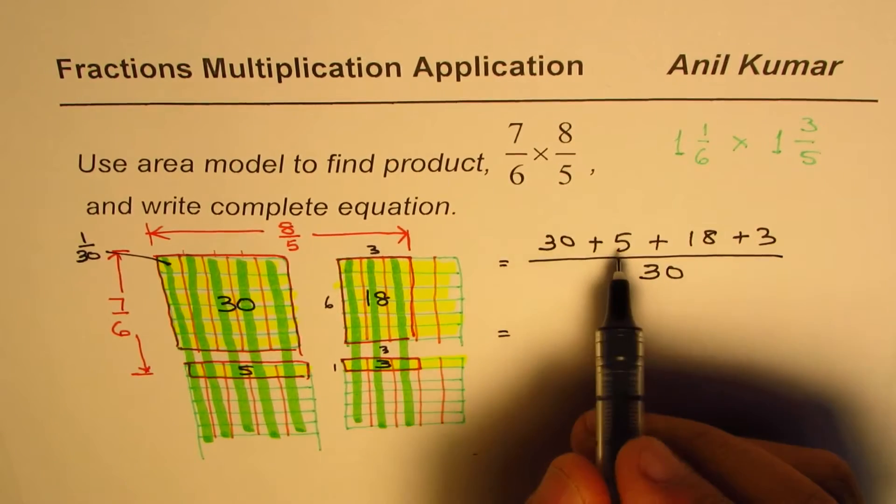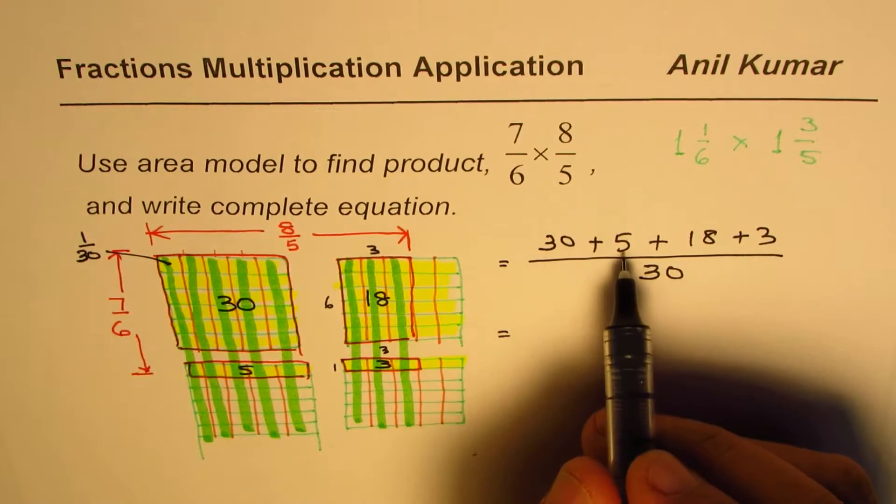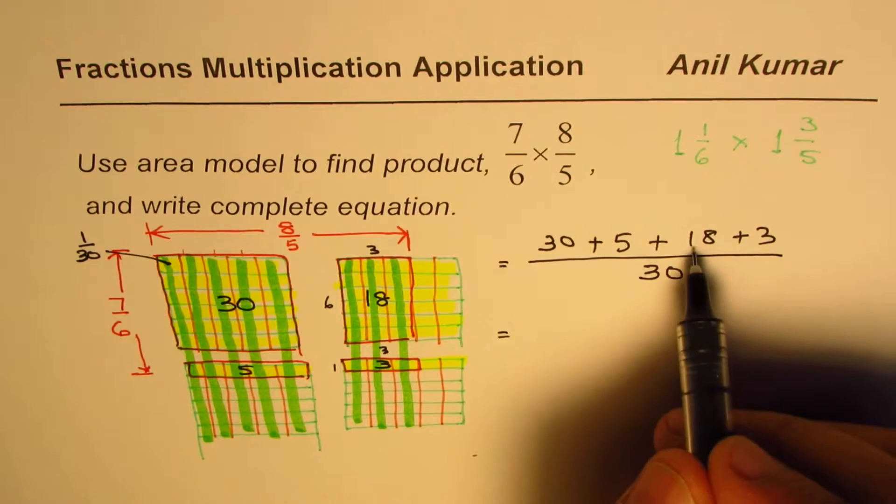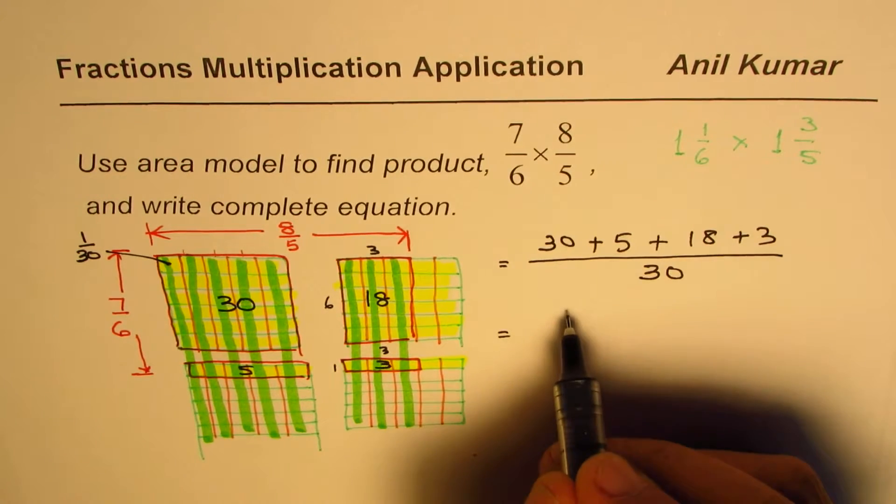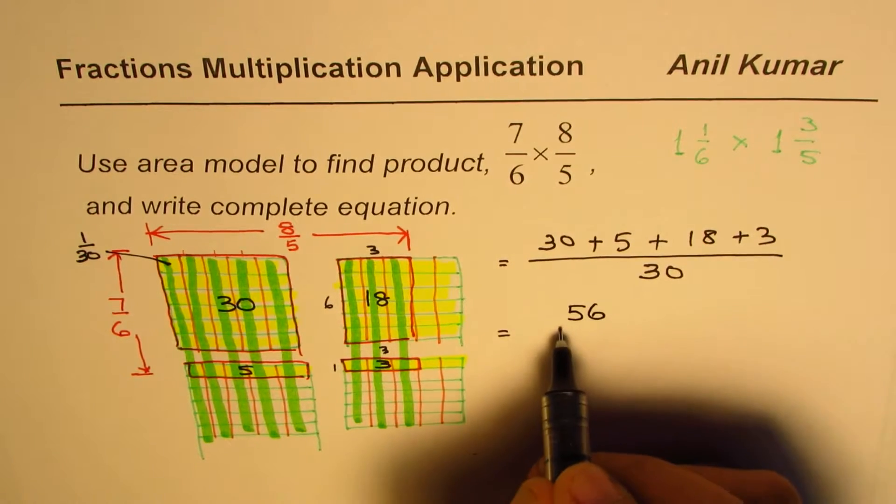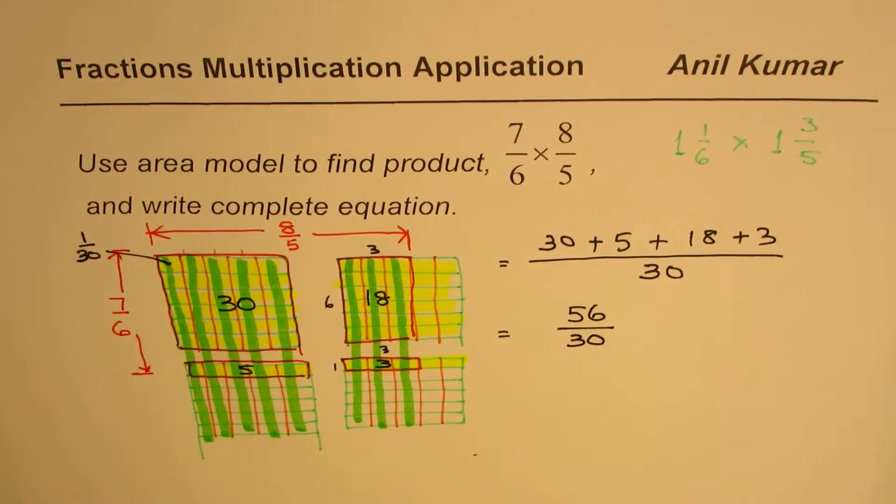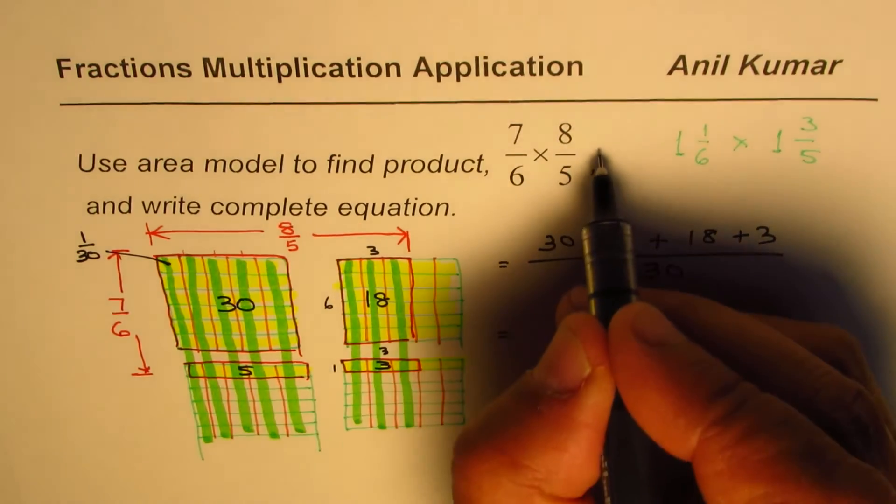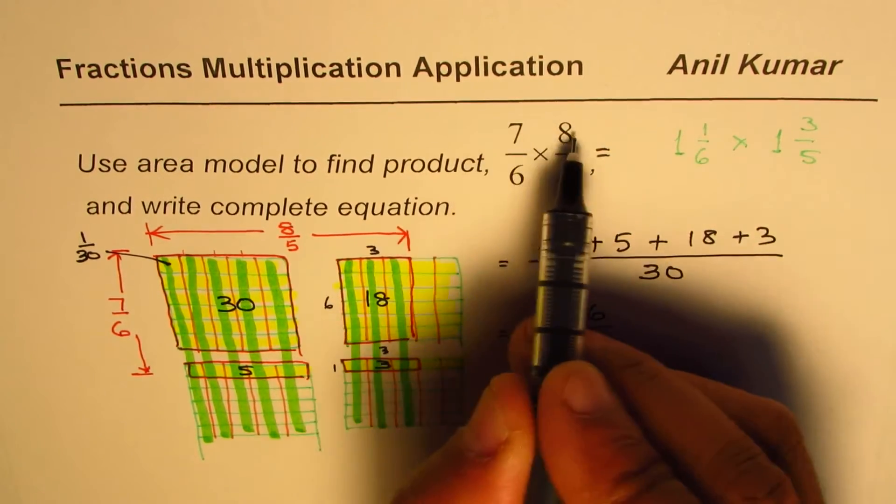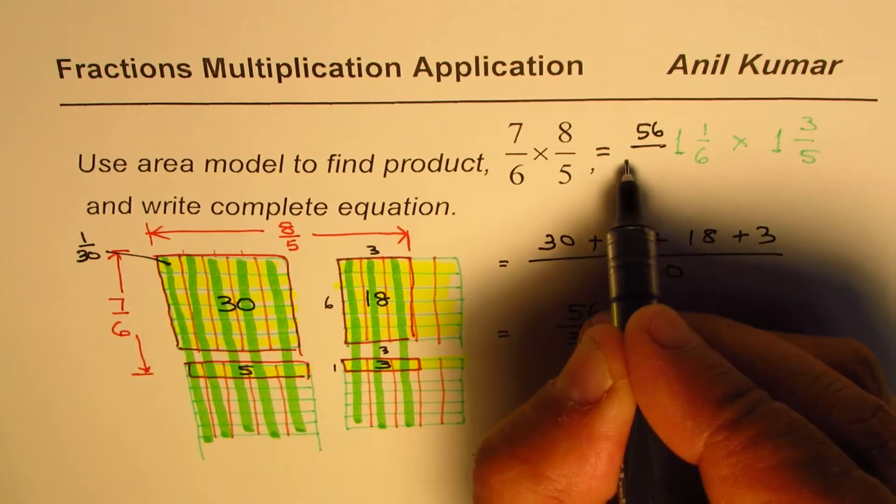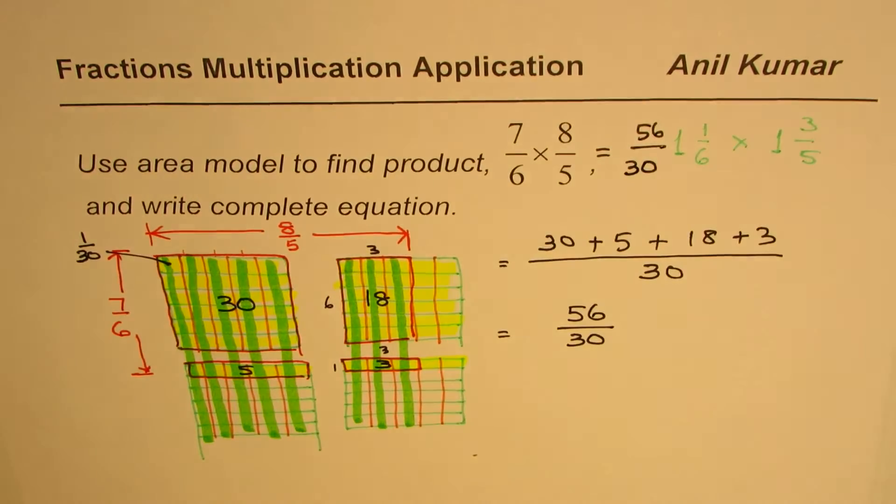Since each rectangle has 30 equal parts. Right. So that is what we get. Now you can add them up. 30 plus 5 is 35, and then 3 is 38. 38 plus 18 is 56. So you get 56 over 30 as your answer. Right. So that is what you get. Now you can check. Even otherwise, when you multiply, 7 and 8 is 56. Divide by 6 times 5 is 30.